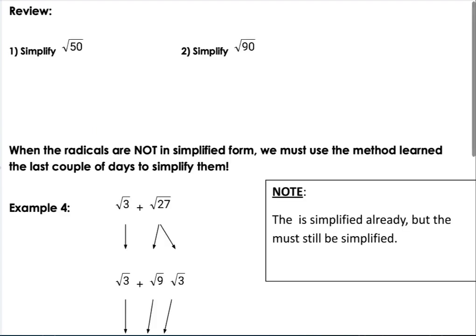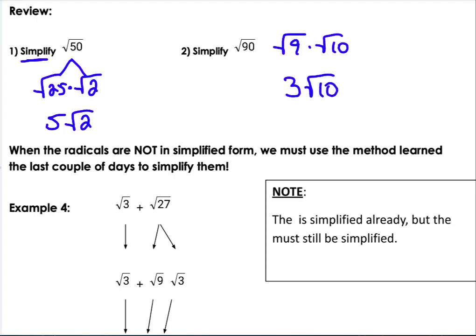Now we're going to take it to where they're not already simplified. If you remember, to simplify a radical we want to break it into pieces where one of them is a perfect square. So 50 is the same thing as 25 times 2. Well, the square root of 25 is 5 square roots of 2. 90 is really the square root of 9 times the square root of 10. Square root of 9 is 3, so 3 square roots of 10. When the radicals are not in simplest form, we need to simplify them first before we can start combining.